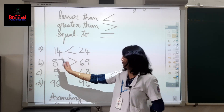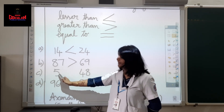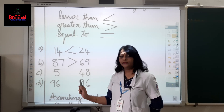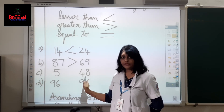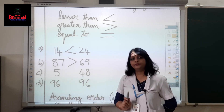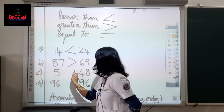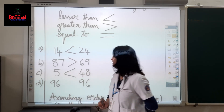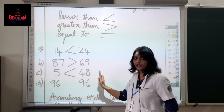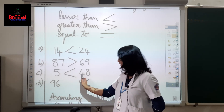Going to the next example: we are comparing 5 and 48. 5 is a single-digit number and 48 is a two-digit number. While comparing, always a single-digit number will be lesser. So 5 and 48 — which is greater? 48. The open end will face 48. We read this as: 5 less than 48. Always we read from left to right.